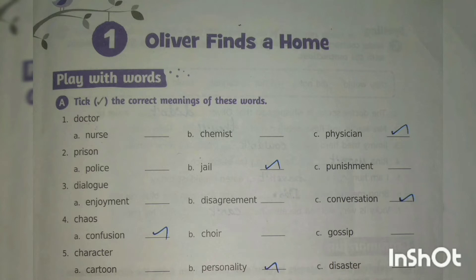Now look at the fifth question — 'character'. The given options are option A, cartoon; option B, personality; option C, disaster. The right answer is character means personality, option B.